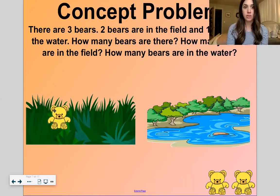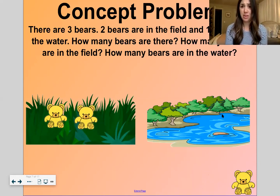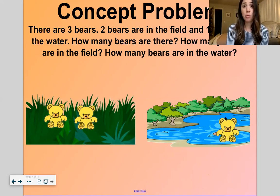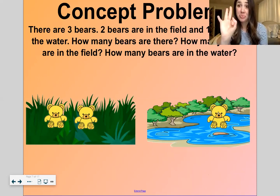Two bears are in the field. Let's put two in the field. And one bear is in the water. How many bears are there all together? Three.